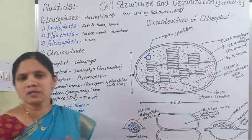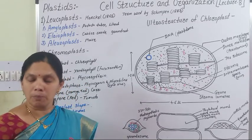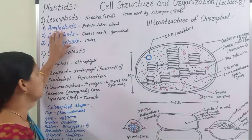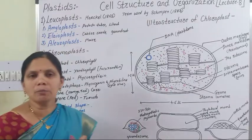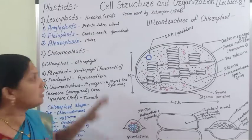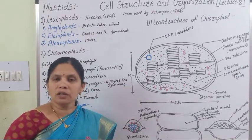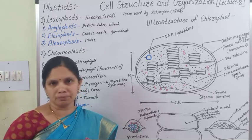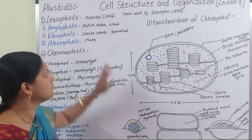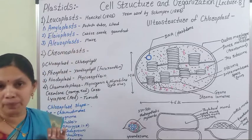Depending upon which food material is stored, there are three types of Leucoplasts. Amyloplasts store food material in the form of carbohydrates. Elaioplasts store oil and lipid — for example, in castor seeds and groundnut seeds, these Elaioplasts are present.